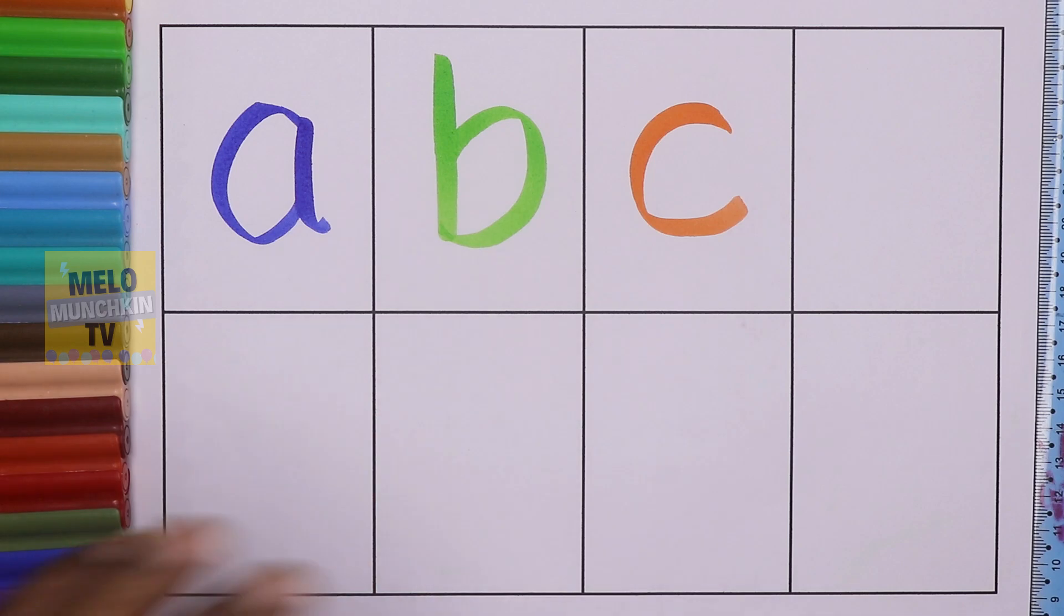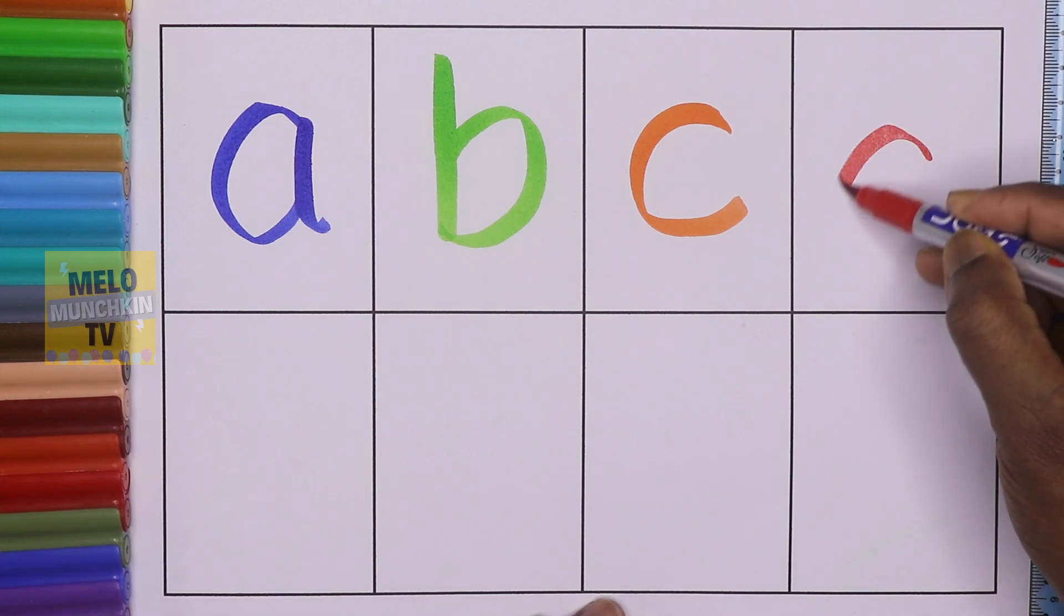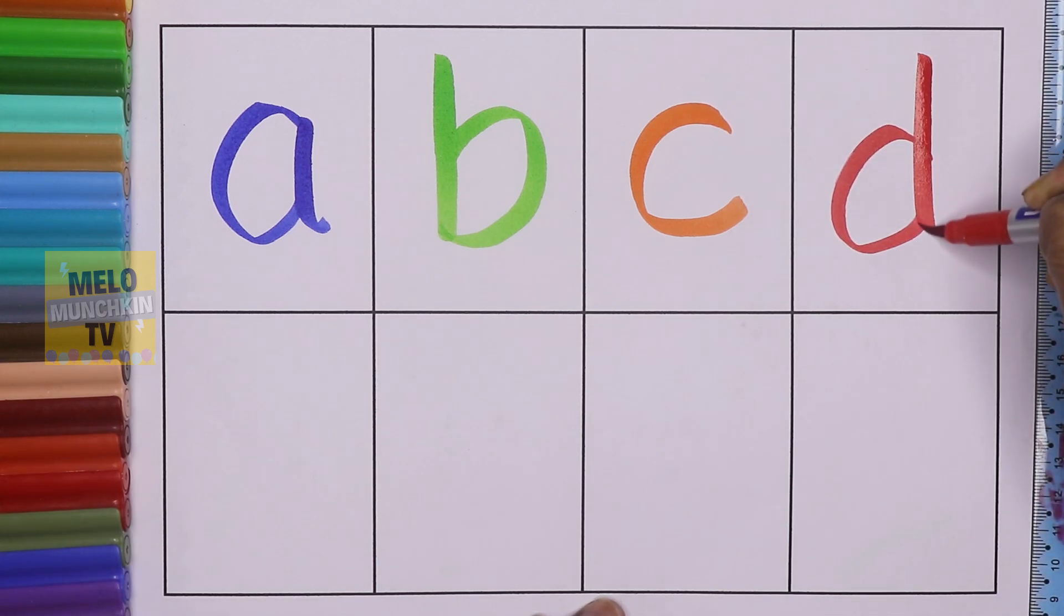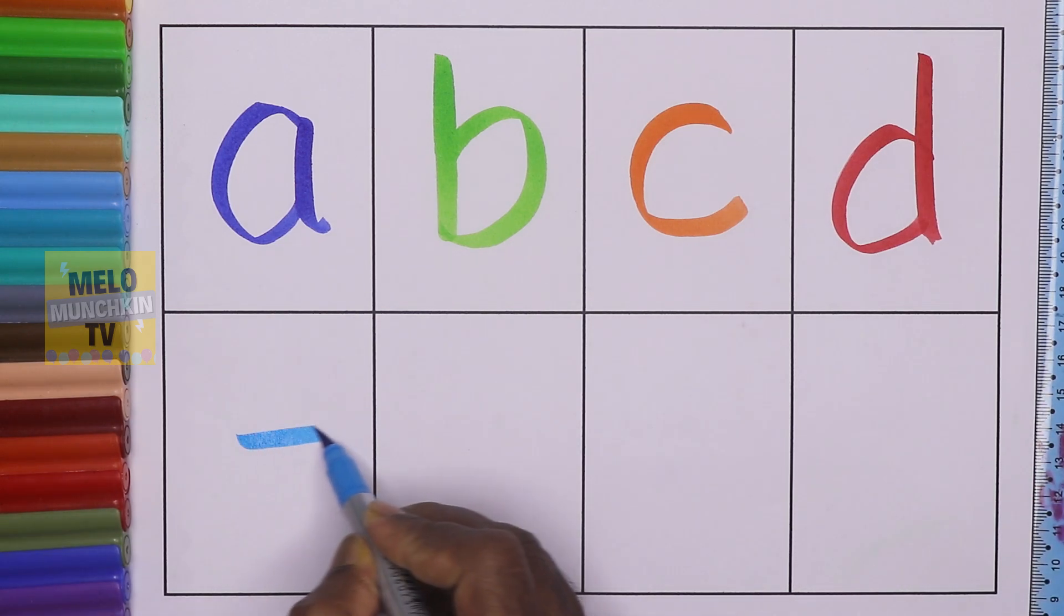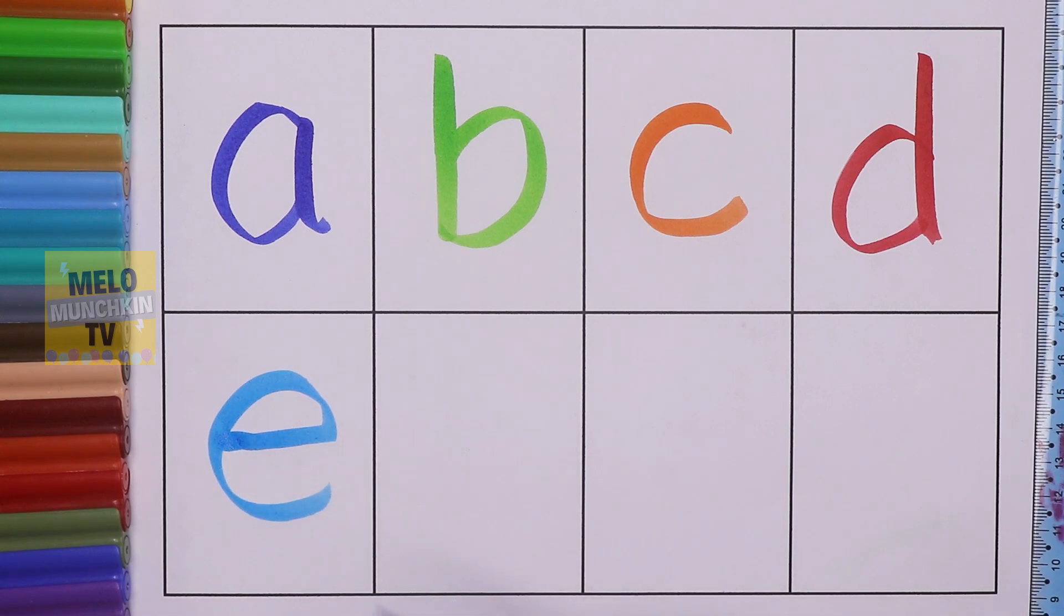Next I'll take red color to write letter D. This is small d. Light blue color. This is small e. E for elephant.